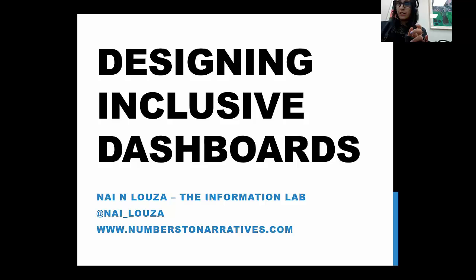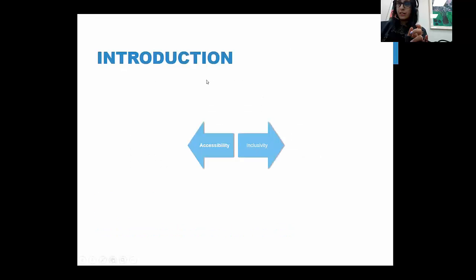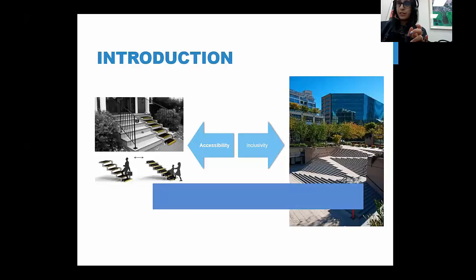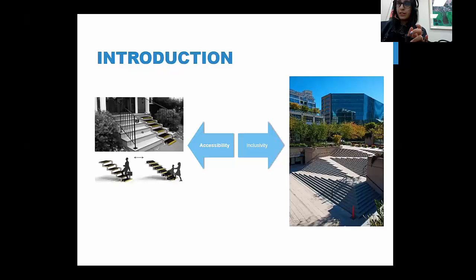When we talk about accessibility, it means adapting something that is currently designed for able-bodied or able-minded people so that it can become usable by folks with disabilities. Inclusivity, on the other hand, means designing something that is usable by everybody regardless of their abilities from the get-go, creating something that benefits all participants.